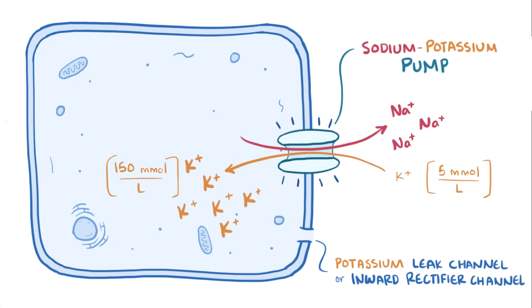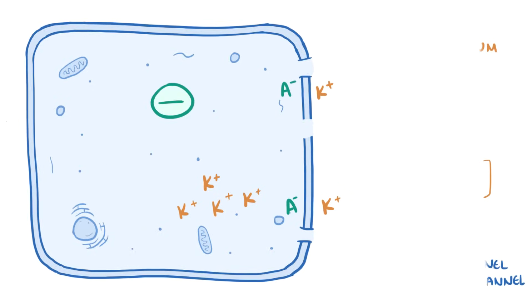So using those channels, the concentration gradient pushes potassium out of the cell, and that potassium brings with it some positive charge and leaves behind some unpaired anions, which carry negative charge because they aren't able to go through the leak channels. Over time, as more potassium ions leave the cell, a negative charge builds up within the cell, and this starts to attract positively charged potassium ions back into the cell. This is called the electrostatic gradient.